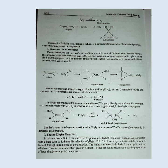The carbenoid brings about stereospecific addition of a CH₂ group directly to the alkene. For example, cis-2-butene reacts with CH₂I₂ in the presence of a zinc-copper couple to give cis-1,2-dimethylcyclopropane. Similarly, trans-but-2-ene reacts with CH₂I₂ in the presence of a zinc-copper couple to give trans-1,2-dimethylcyclopropane.